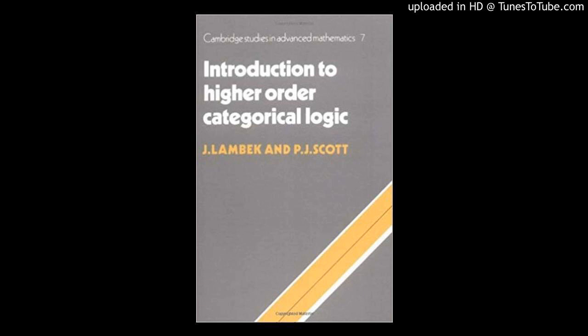So you get a category of effect algebras. You might want to ask, since I've introduced these MV algebras, how are they related to effect algebras? It turns out an effect algebra satisfies the Riesz decomposition property if whenever you have a ≤ a sum, then a itself can be written as a sum where the summands are pointwise ≤. The theorem is: an effect algebra is an MV effect algebra if and only if it's lattice ordered and has the Riesz decomposition property.